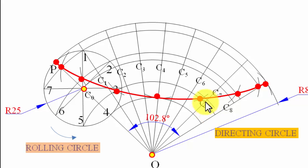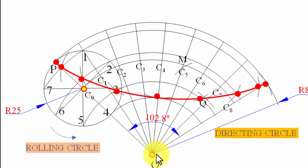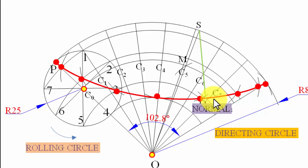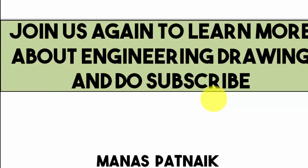With Q as center and 25mm as radius, put an arc on the center-arc locus. Call this intersection point M. Join M with O and extend the line backwards — it intersects the directing circle arc at a point S. Join S to Q — this line SQ is the normal. The tangent is drawn perpendicular to this normal, just grazing through and touching the hypocycloid at Q.